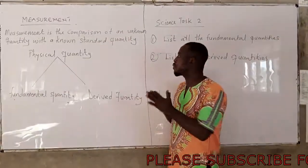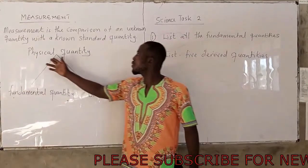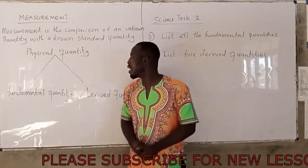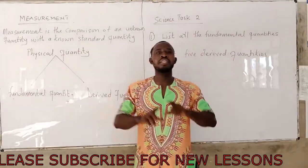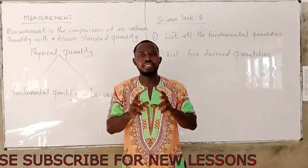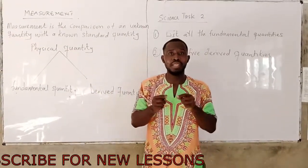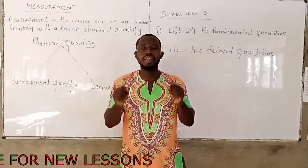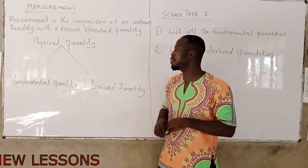Now, under measurement, we have physical quantity. A physical quantity is a quantity that can be measured.